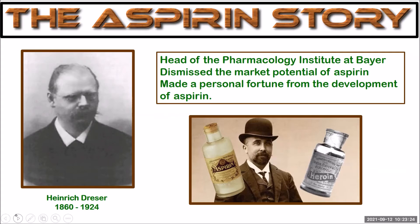Eichengren wrote a paper while in Theresienstadt concentration camp in 1944, claiming to have instructed Hoffman on the synthesis and to have been responsible for aspirin's clinical testing. This case was not re-examined until 1999, by Walter Sneeder of the Department of Pharmaceutical Sciences at the University of Strathclyde in Glasgow. He concluded that Eichengren's account was convincing and correct, and recommended that Eichengren deserved credit for inventing aspirin. The Bayer company denied this in a press release. In the end, neither Hoffman nor Eichengren received any royalties, but Heinrich Dresser made a personal fortune. Modern pharmaceutical patents now allow companies to claim ownership of a synthesis they develop.